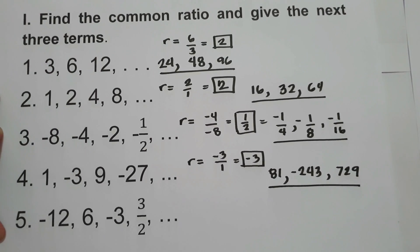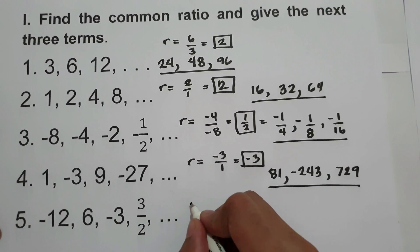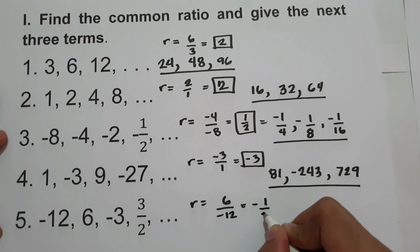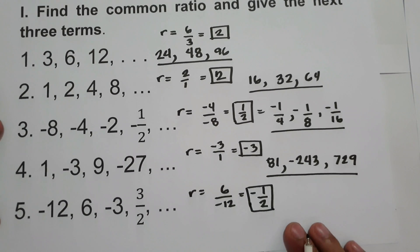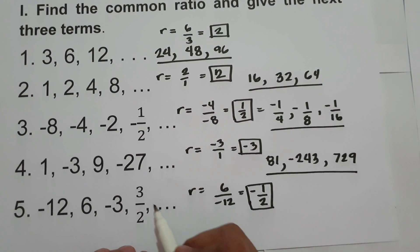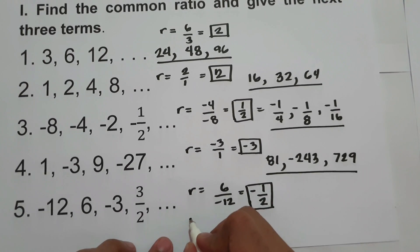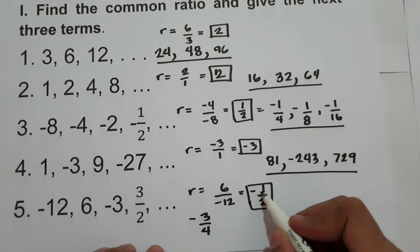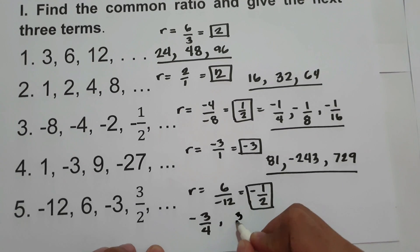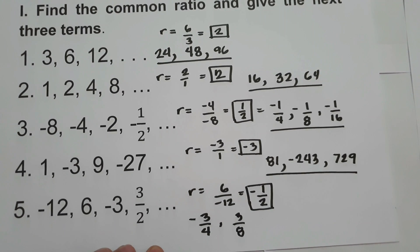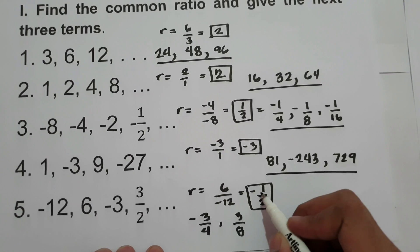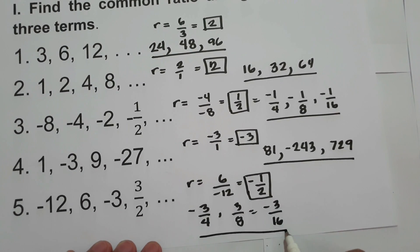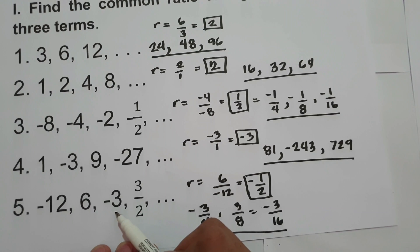What about number 5? Let us find first the common ratio: 6 divided by negative 12 is negative 1 half. Now let us find the next 3 terms: 3 over 2 times negative 1 half is negative 3 over 4; negative 3 over 4 times negative 1 half is positive 3 over 8; and 3 over 8 times negative 1 half is negative 3 over 16. So these are the next 3 terms in the sequence negative 12, 6, negative 3, 3 over 2.